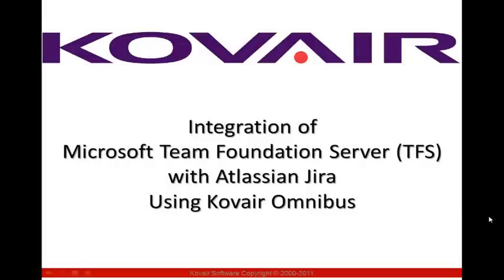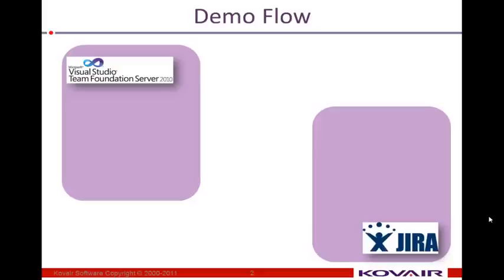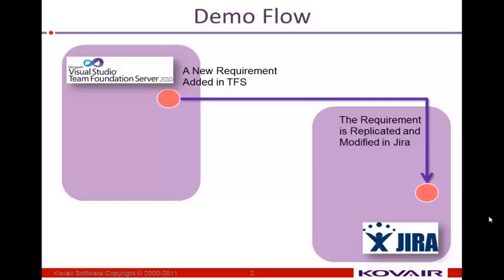Hello, and welcome to a brief video on the integration of Microsoft Team Foundation Server, or TFS, with Atlassian Jira using Covear Omnibus. Say product management creates a new requirement in Team Foundation Server, but unfortunately engineering uses Jira, so we have to replicate this requirement from TFS to Jira. Covear Omnibus does that replication so that engineering can review and change the status to approved, as well as do other kinds of modifications.